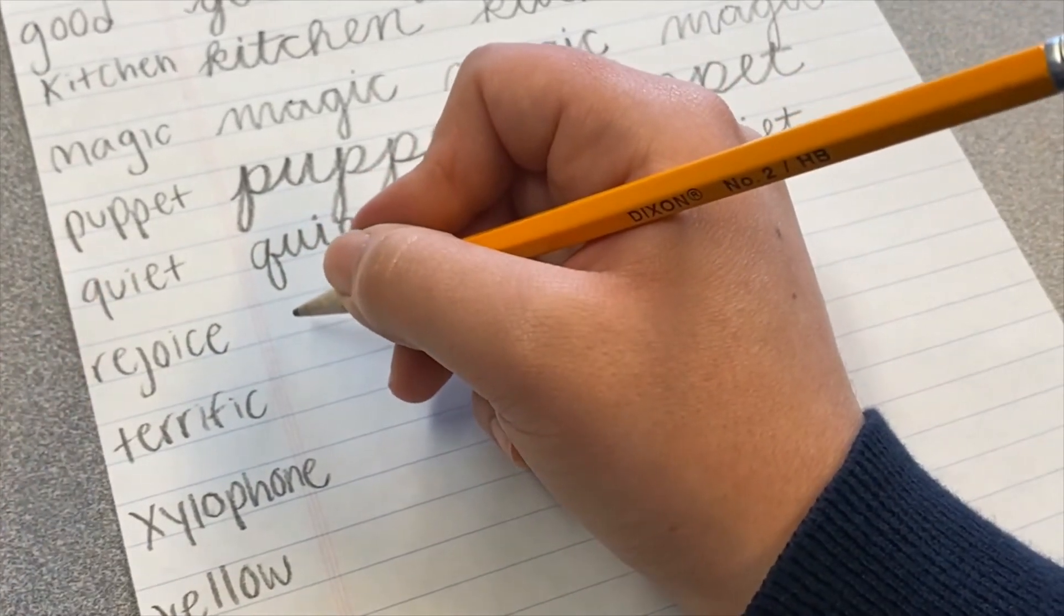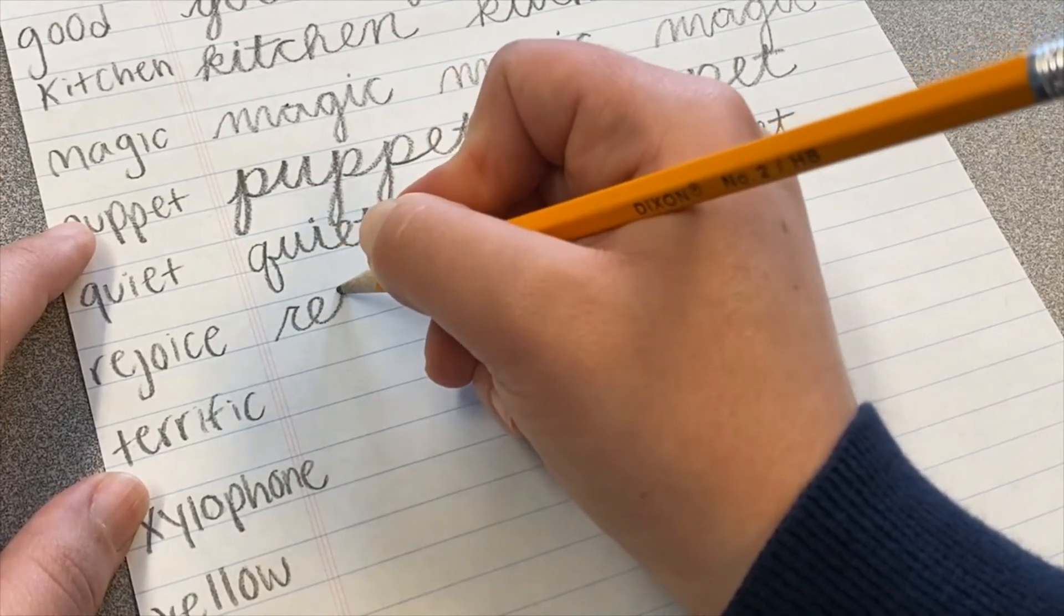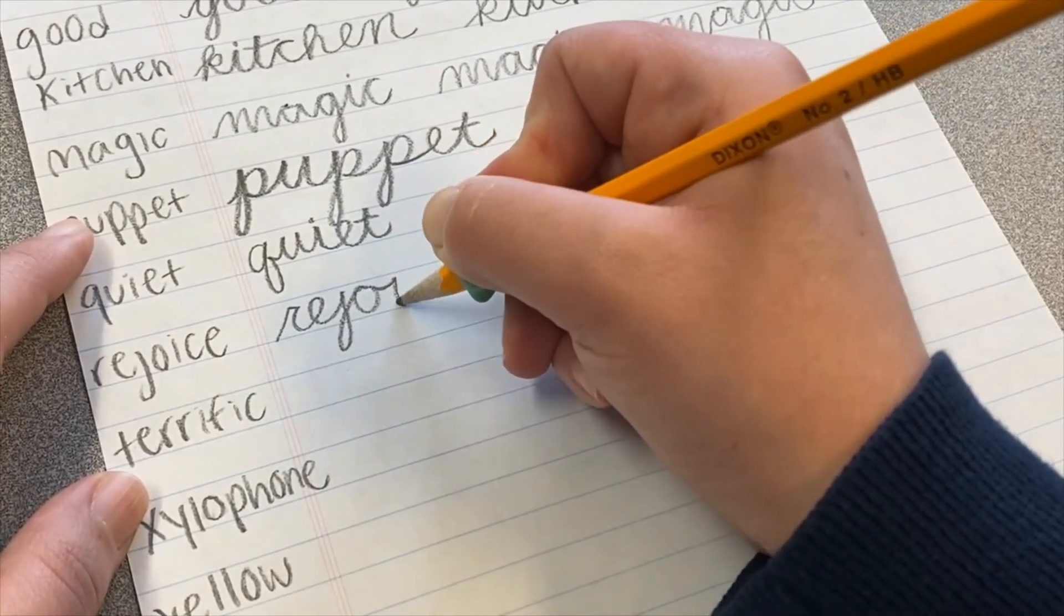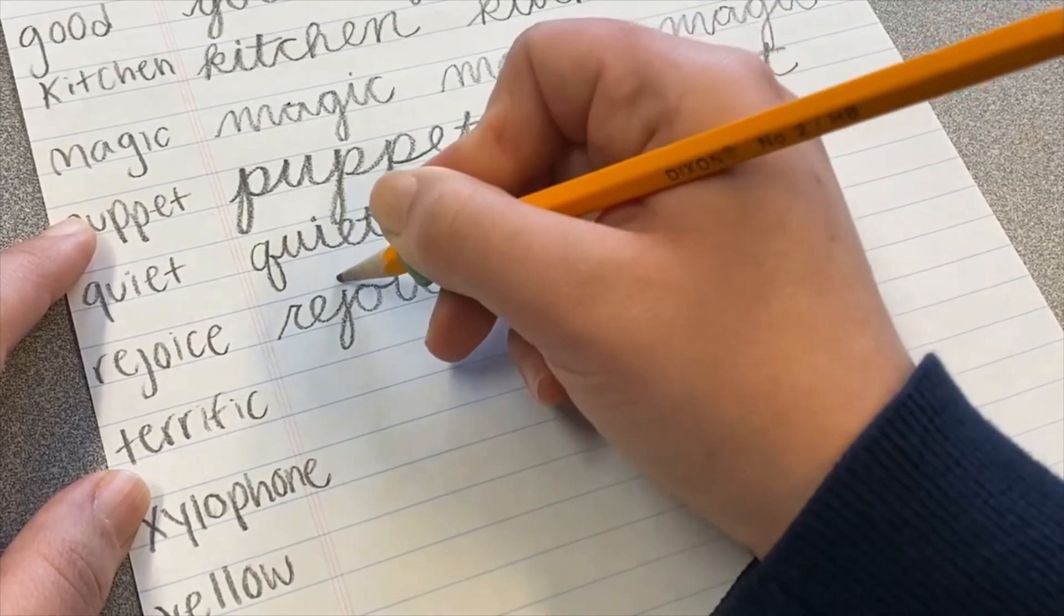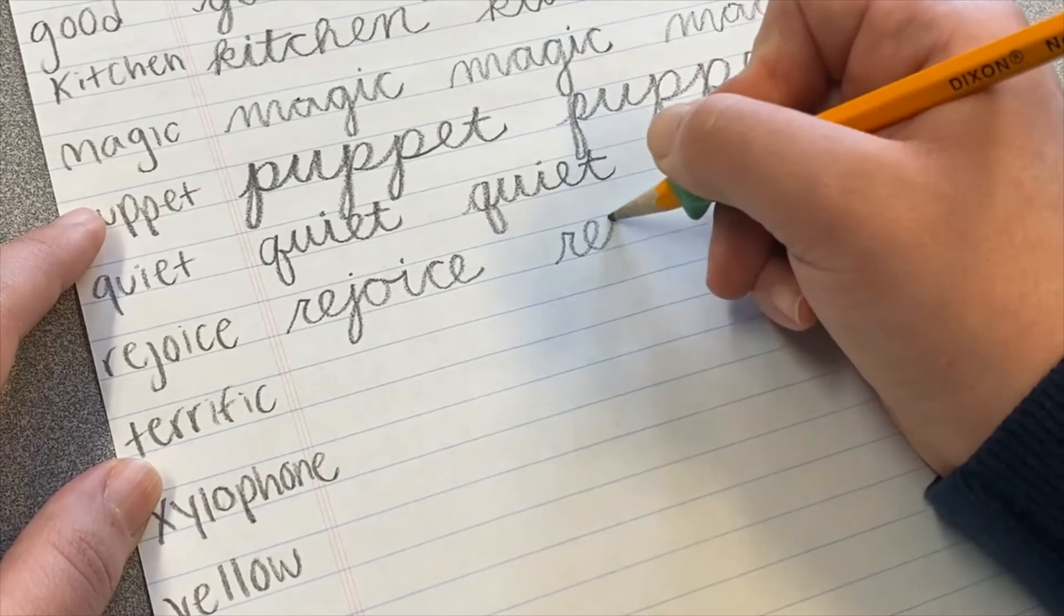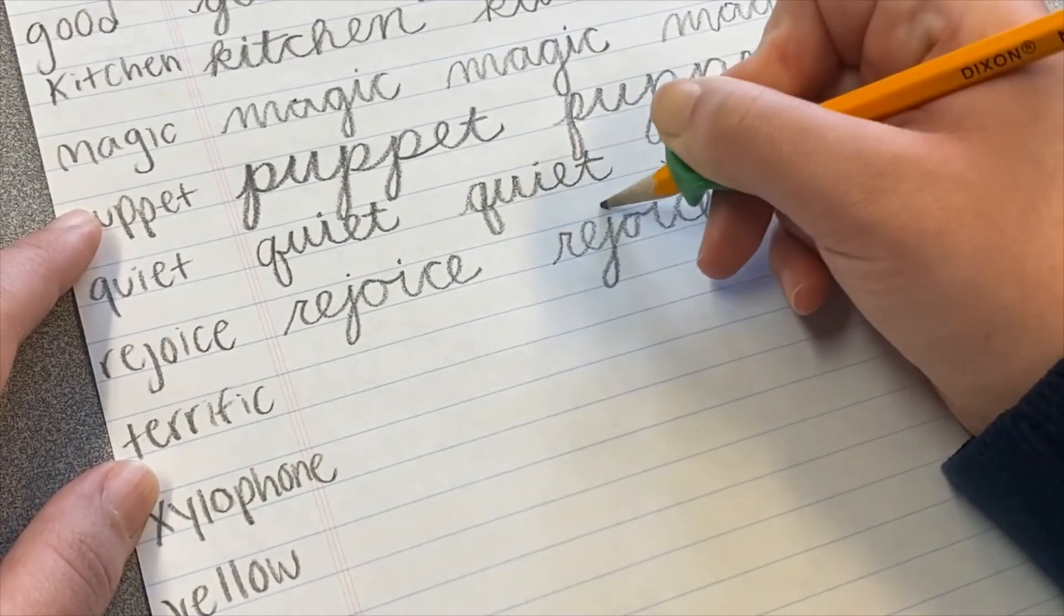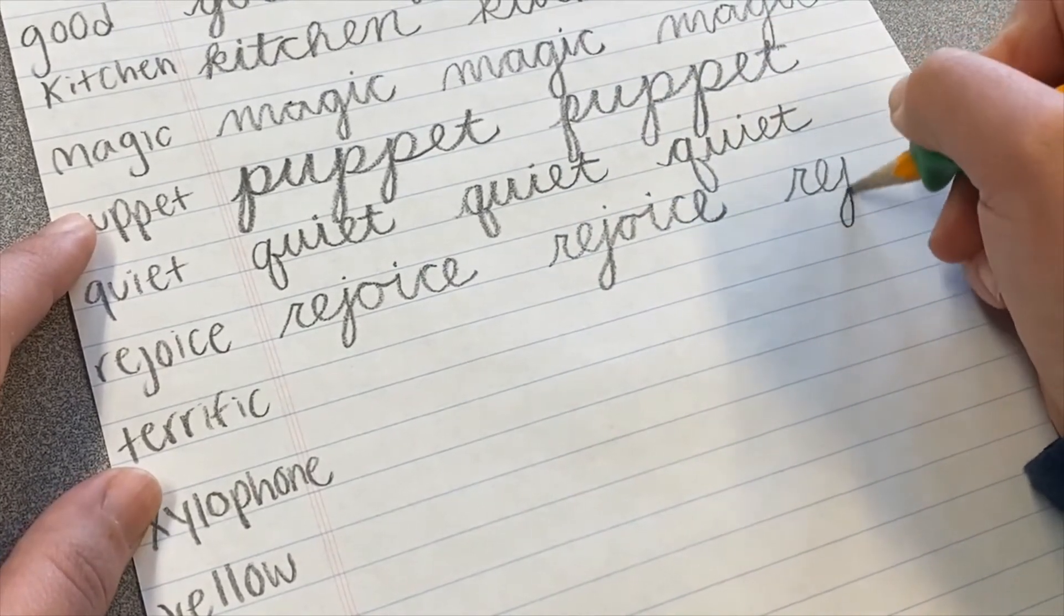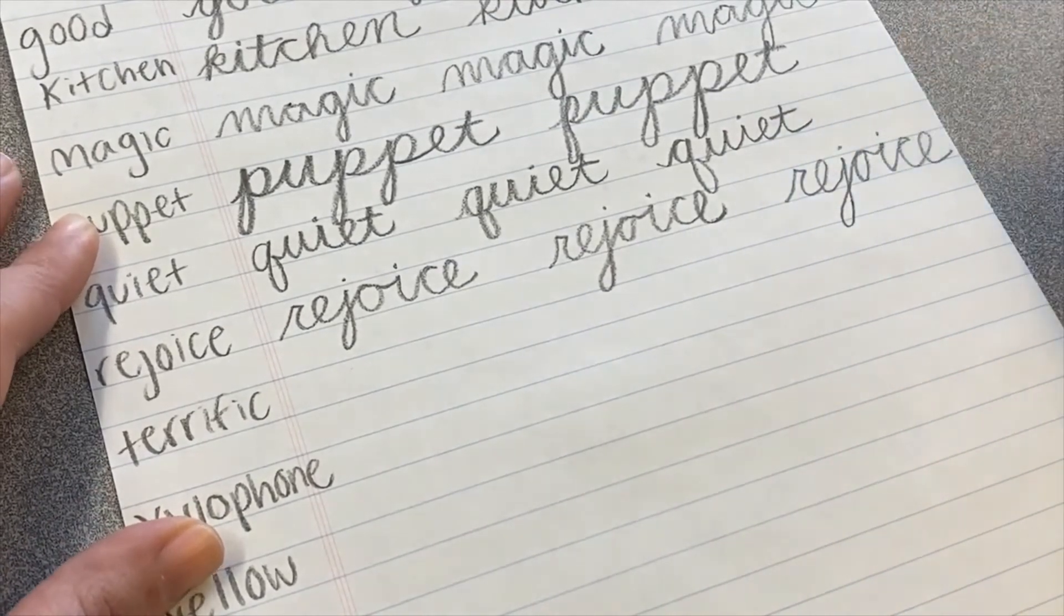And the next word is rejoice. So we'll make an R. E, J has a loop. O connects at the top. I, C, E, and then the I and the J's get their dots.